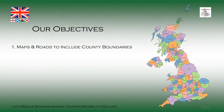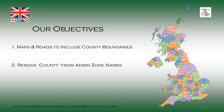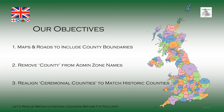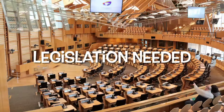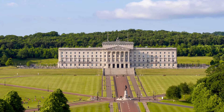Three campaign objectives: 1. Maps and roads to include historic county boundaries. 2. Remove the term county from the names of local admin zones. 3. Realign ceremonial counties to match traditional counties. Simple they may be, but they are only achievable with legislation.